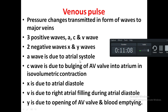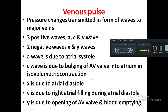The A wave is caused by atrial systole — atrial contraction increases the pressure in the atrium, which is transmitted backward and shown as a positive A wave. The C wave is also a positive wave, caused by the bulging of the AV valve into the atrium during isovolumetric contraction — when the ventricle starts contracting it pushes the right atrioventricular valve slightly towards the right atrium, producing a positive wave.